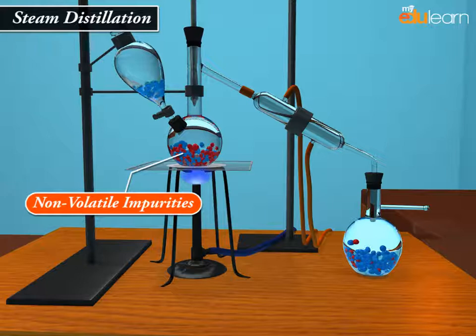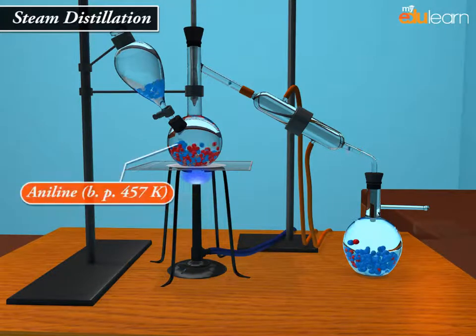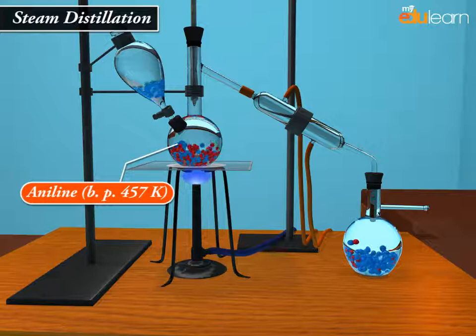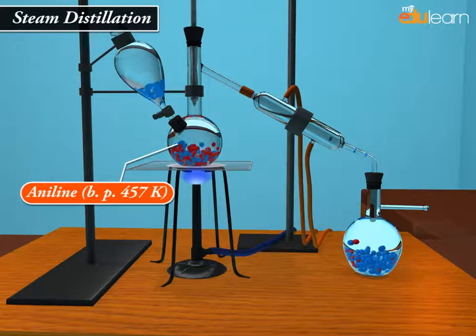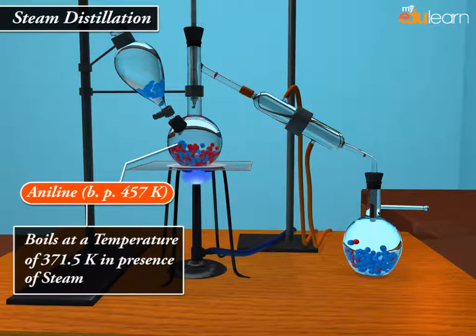Aniline, BP 457 Kelvin, can be purified by steam distillation since it boils at a temperature of 371.5 Kelvin in presence of steam.